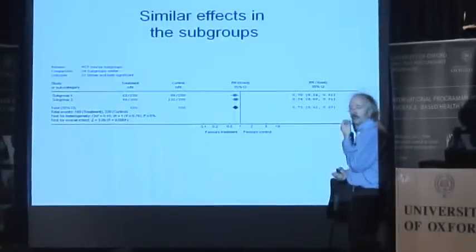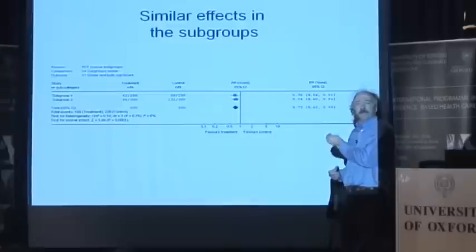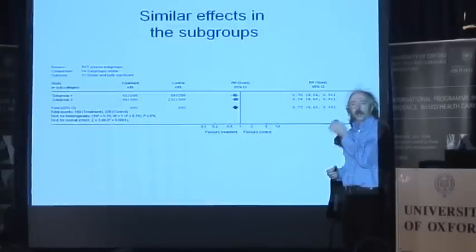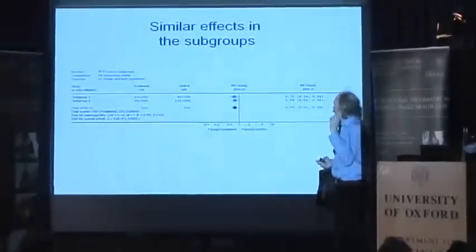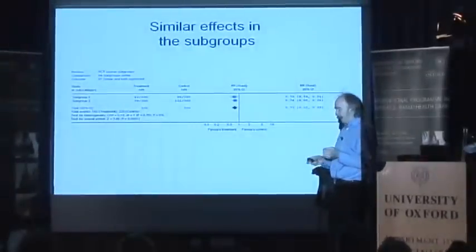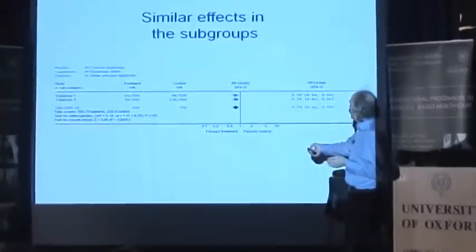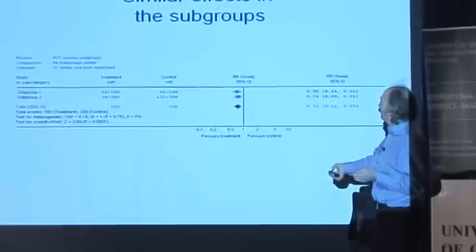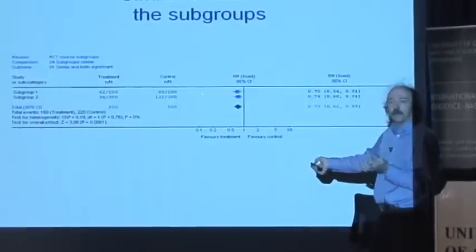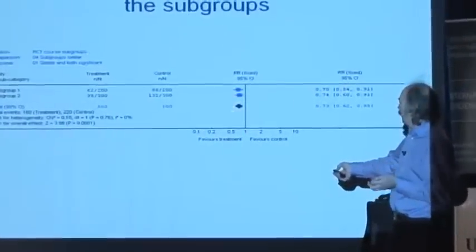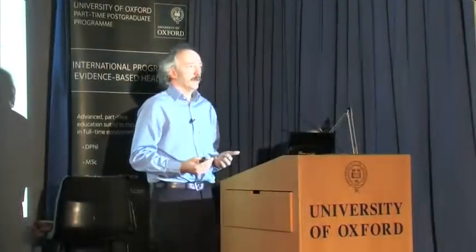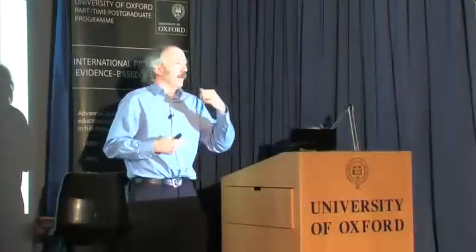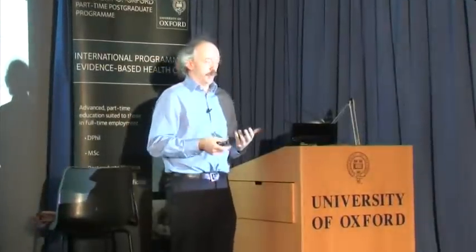This is one we could come away from feeling very reassured. Overall there's a benefit of treatment. In subgroup one there's a benefit of treatment. You're just thinking: does it touch the line of no difference? It's the confidence interval — no it doesn't, no it doesn't. So we can come away from that thinking it works; whether man or woman, it works.